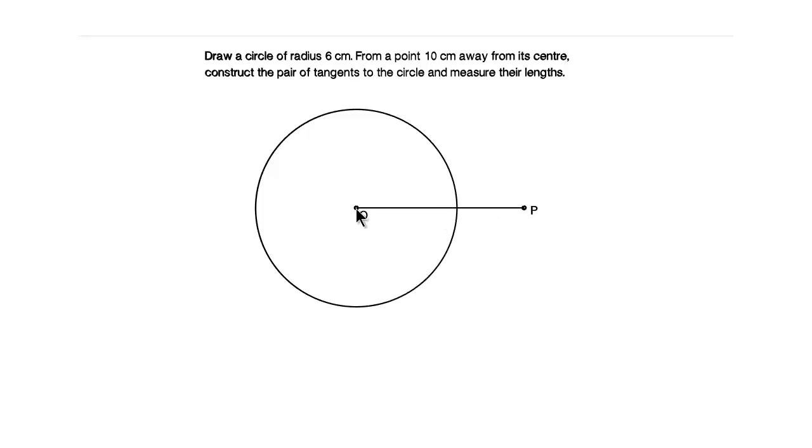So take more than half of OP and keep your compass at point O, draw an arc above the line OP and one below the line OP. So now without altering the distance in your compass, keep your compass at point P and draw an arc above the line and one below the line. And these two arcs should be intersecting with the previous arcs that you have drawn.